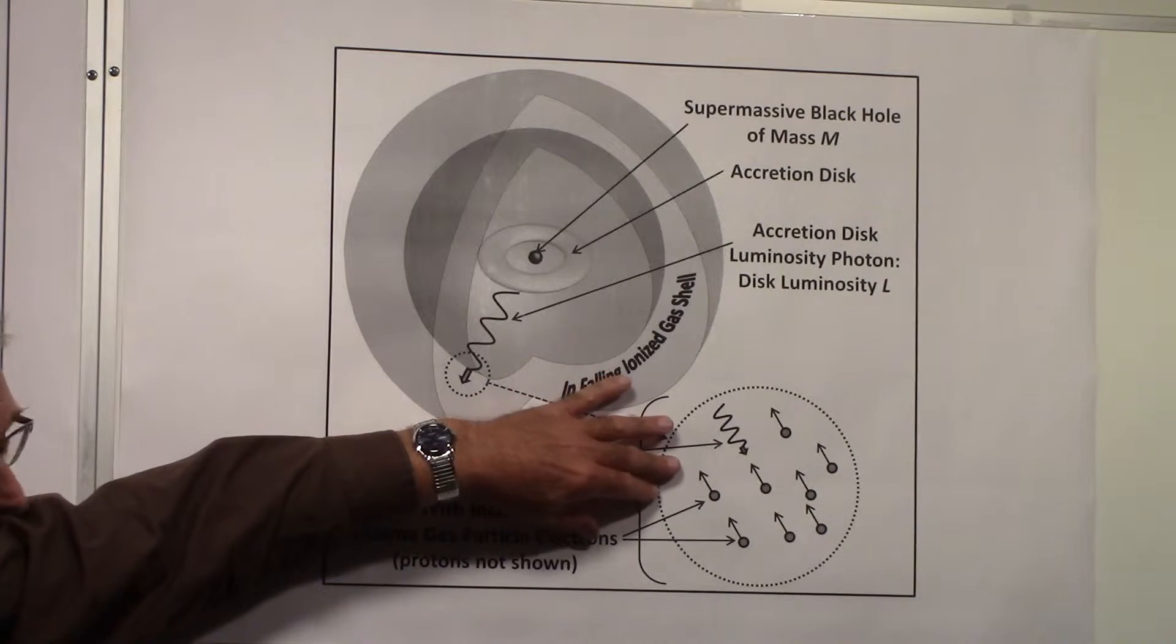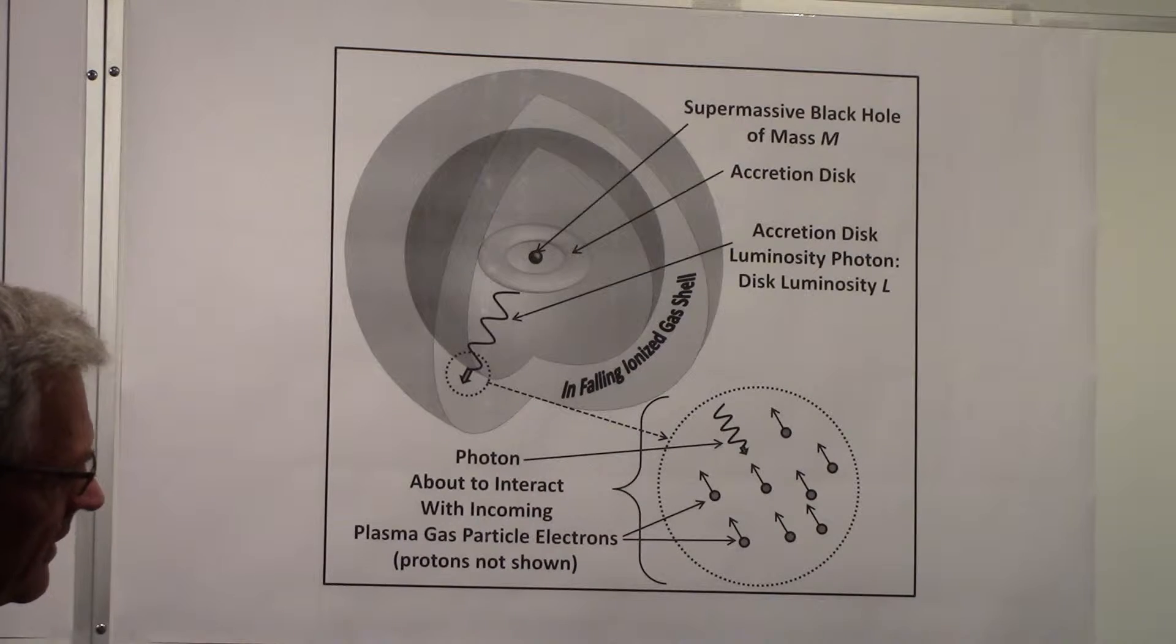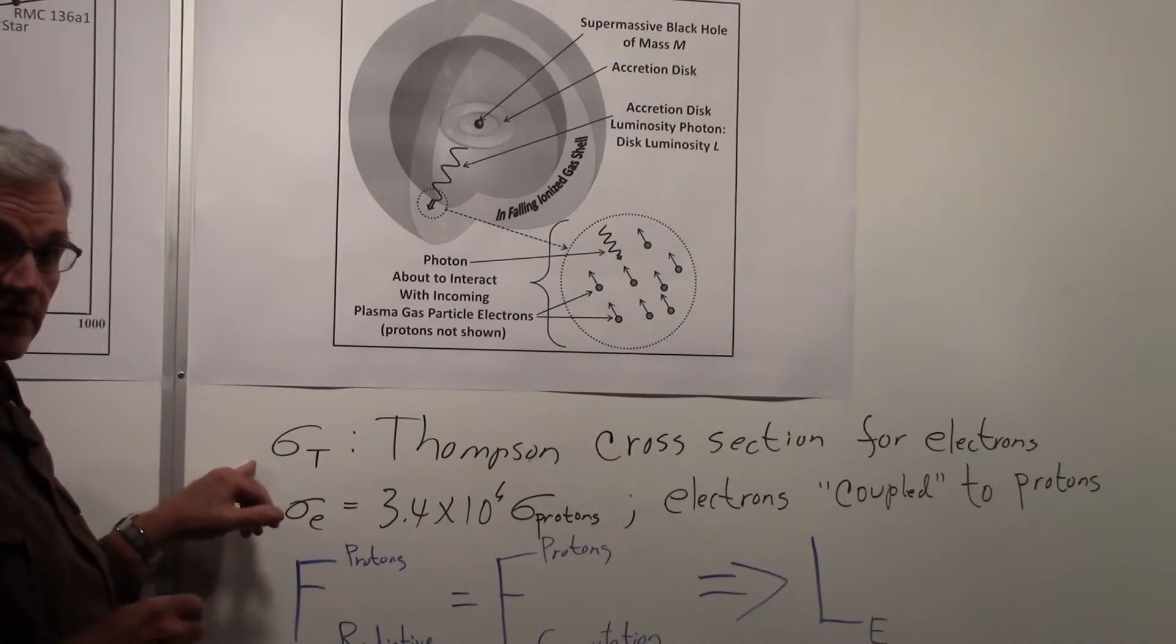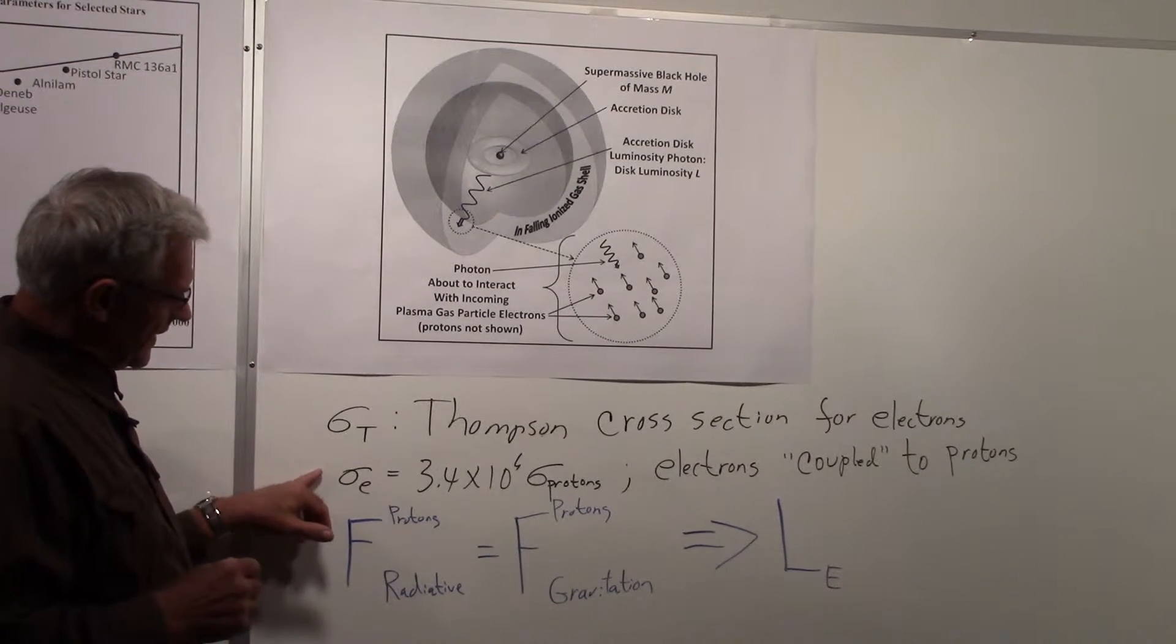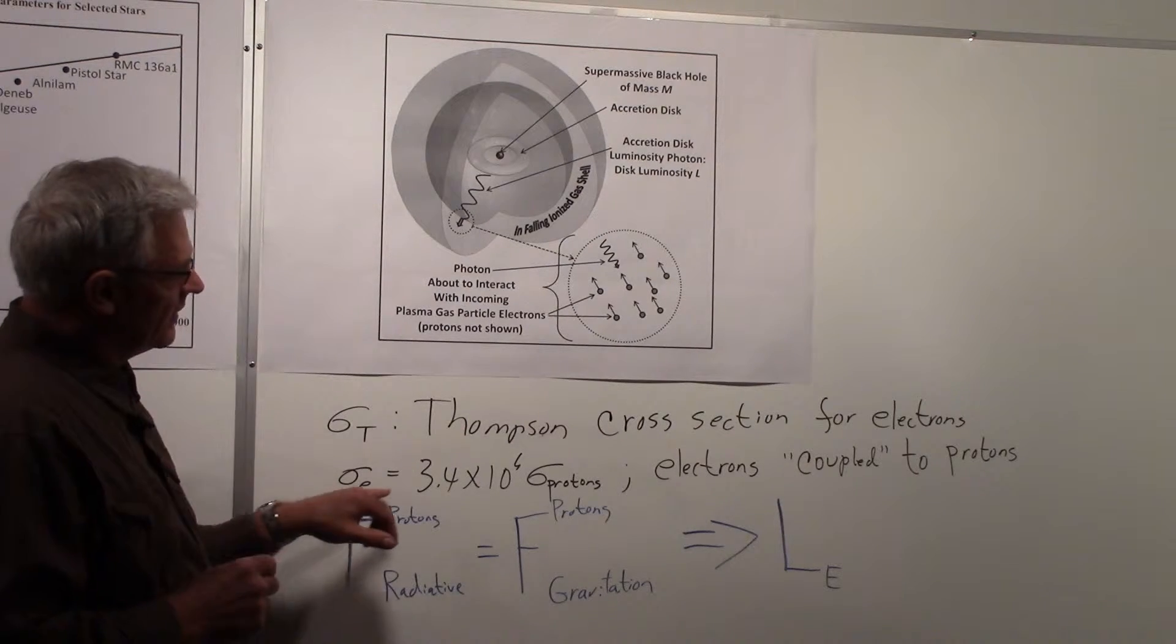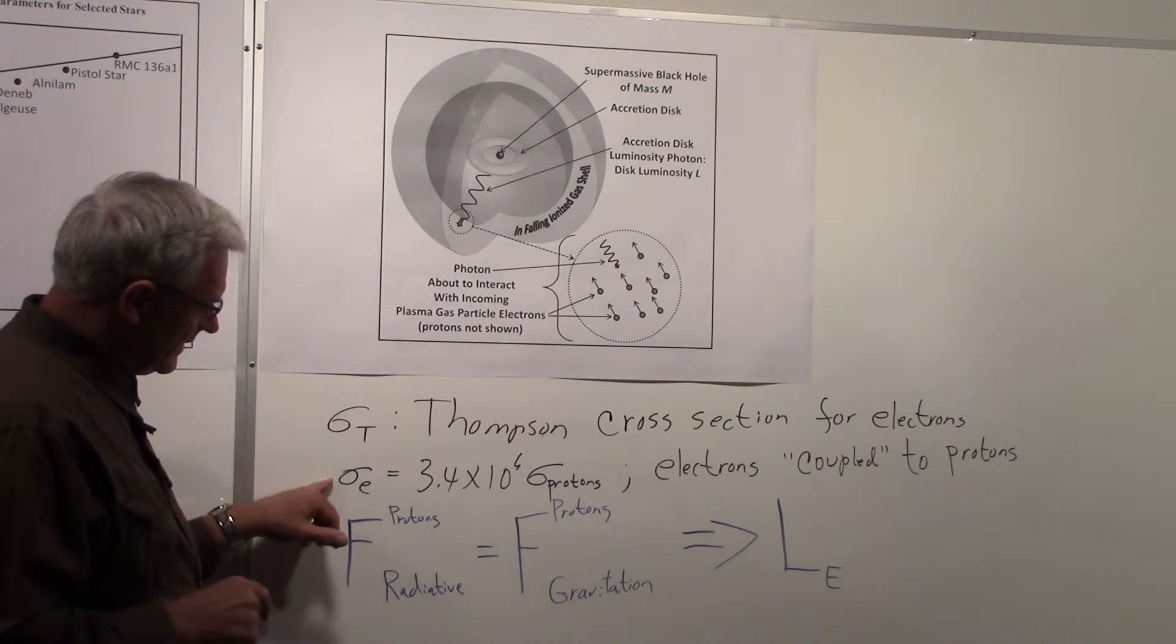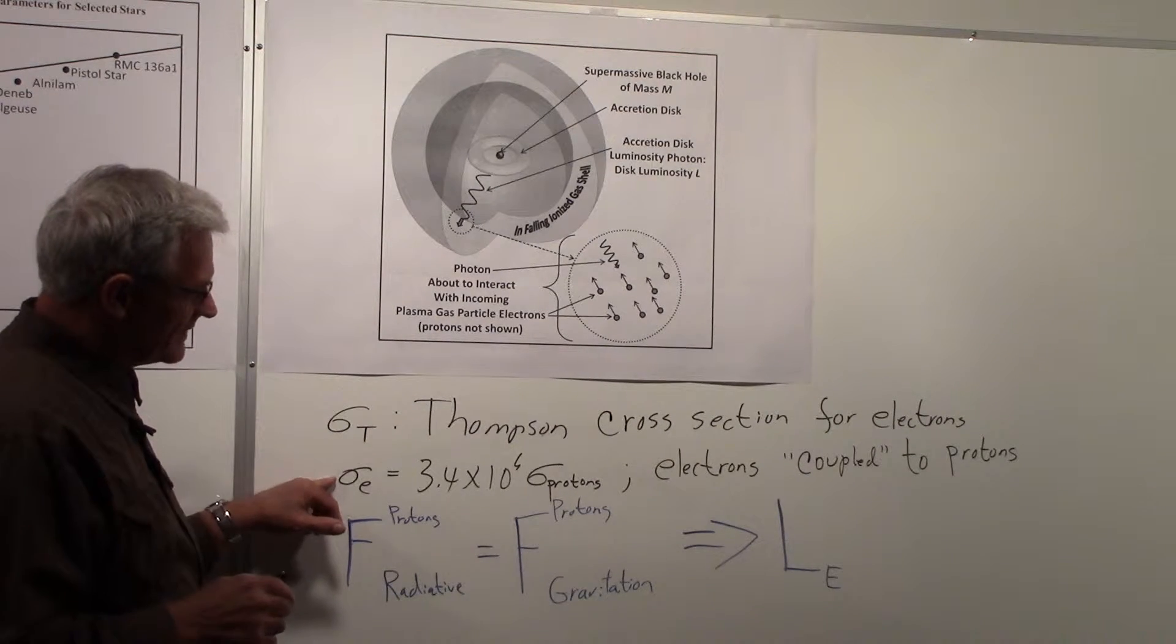But the protons are coupled to electrons, so whatever happens to the electrons is in a sense going to happen through the protons. We introduced the idea of the Thompson cross-section for electrons and argued that the cross-section for electrons was over a million times larger than the cross-section for protons, so in the calculations we only had to worry about the cross-section for electrons, and that is what sigma t means.